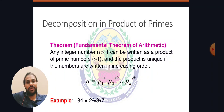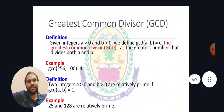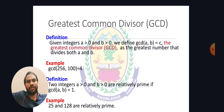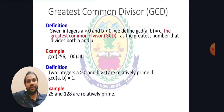The concept of GCD — greatest common divisor: given integers a greater than 0 and b greater than 0, we define gcd(a, b) = c, where c is the greatest number that divides both a and b. For example, gcd(256, 100) equals 4, since 4 is the greatest number that divides both.